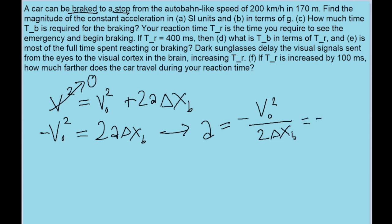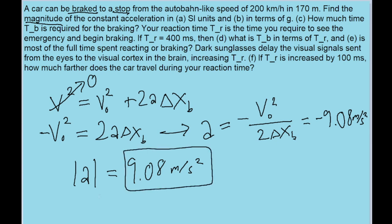And if we put this into our calculator, we find an acceleration of about negative 9.08 meters per second squared. However, since the problem is specifically asking only for the magnitude, we're going to ignore the minus sign when writing our answer. So the absolute value of the acceleration is just 9.08 meters per second squared. And that's our answer to part A.